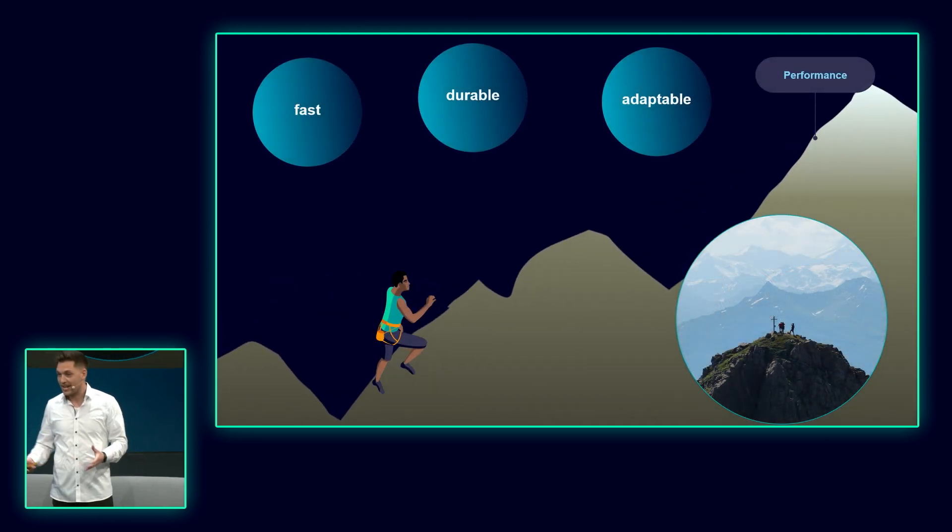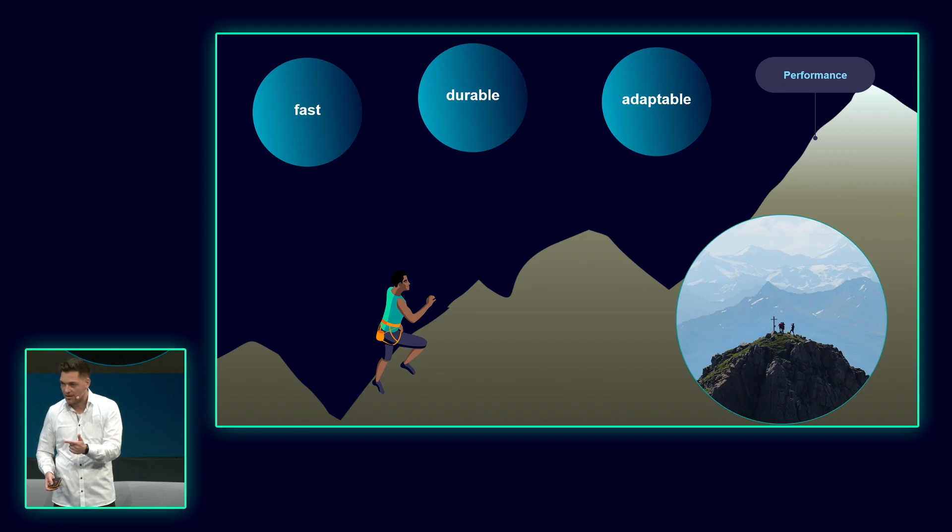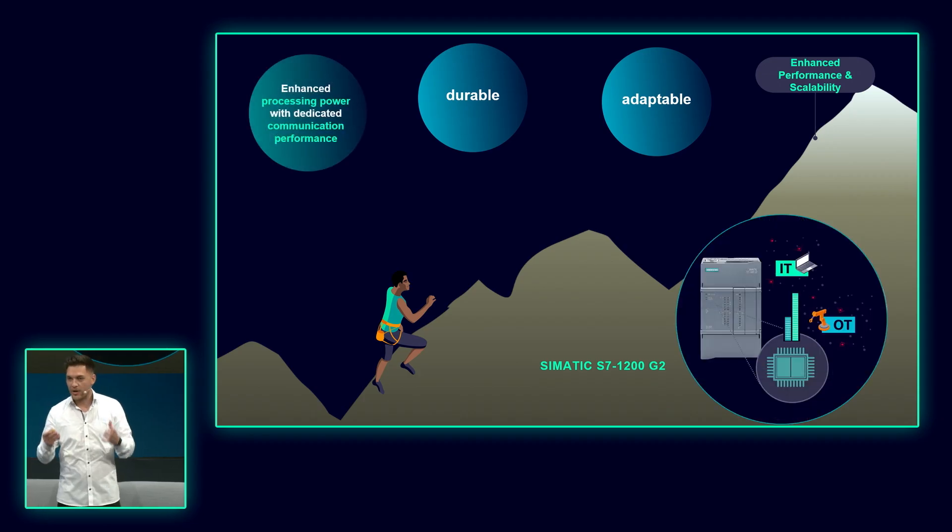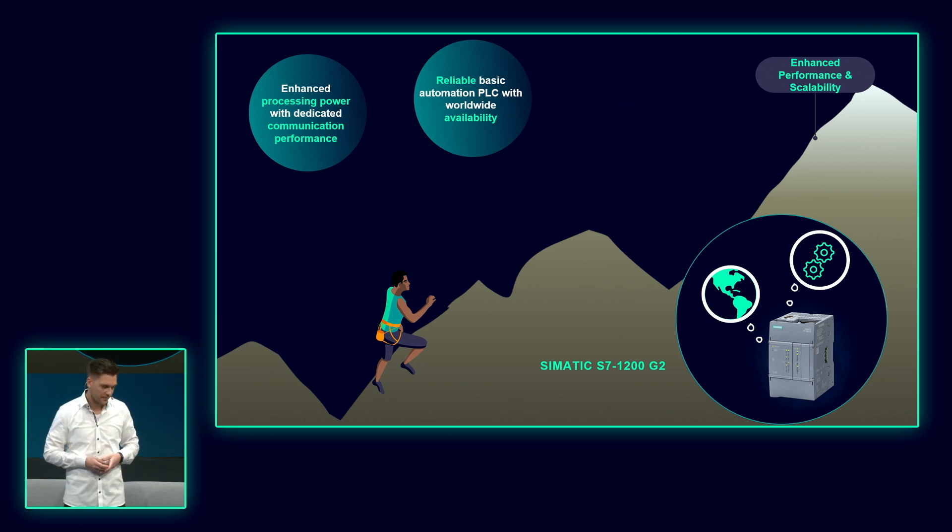We got quite far on our hike already and now we are trying to reach top level performance. To reach that we need to be fast, we need to be durable, and we need to be adaptable. This is kind of the DNA of all our SIMATIC controllers and also of our SIMATIC S7-1200 G2. Why is it fast? We deliver now enhanced processing power and dedicated communication performance. That means the automation program and the data communication run separately on this controller, and that helps you to make this PLC more than two times faster than the previous generation. It is durable. We offer well-known reliability as with the previous generation SIMATIC S7-1200. And you also benefit from worldwide availability, worldwide access to spare parts. That helps to optimize your machine uptime in case there is an error.